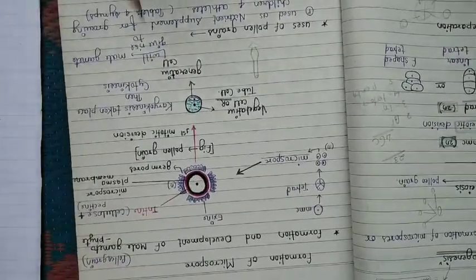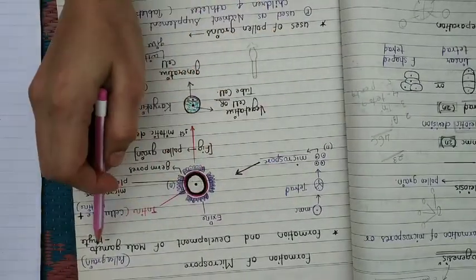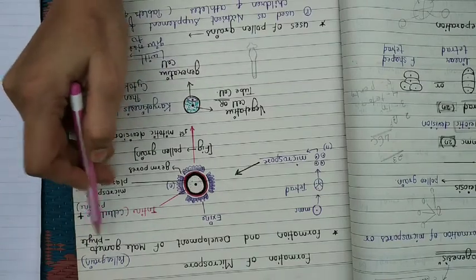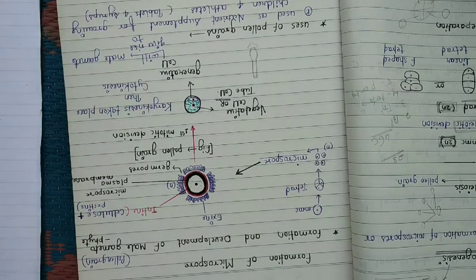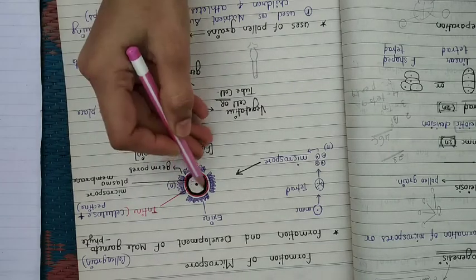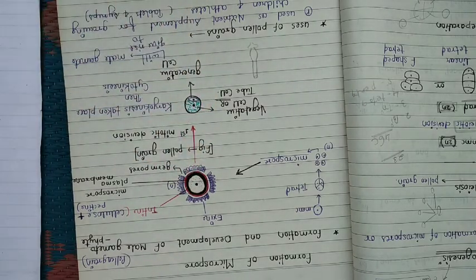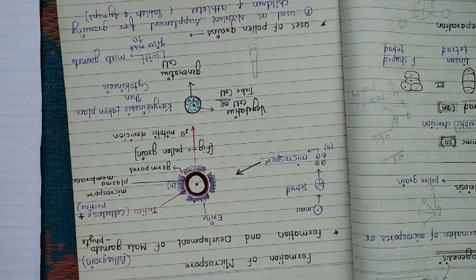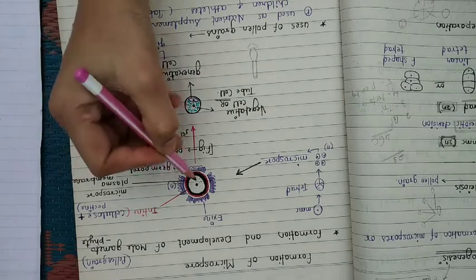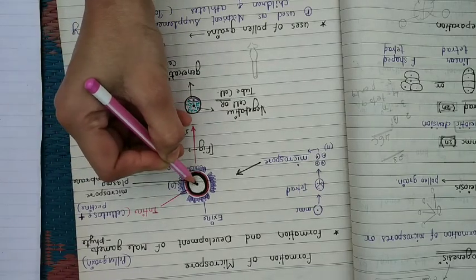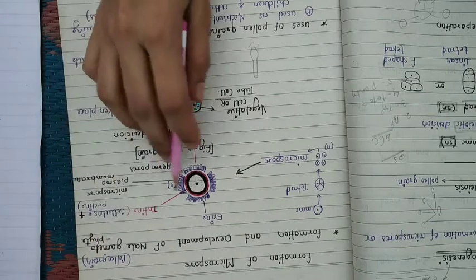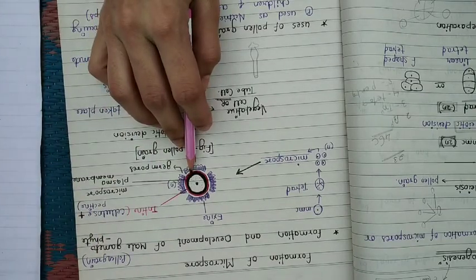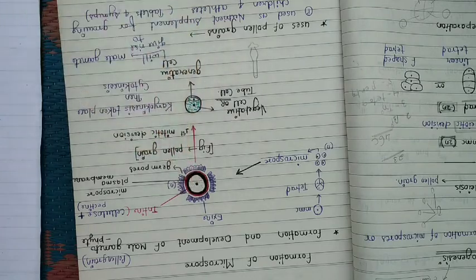Let's move on to the formation and development of male gametophyte. The gametophyte is a structure that helps to form pollen grain. The whole pollen grain does not participate; the main nucleus is the main male gamete.